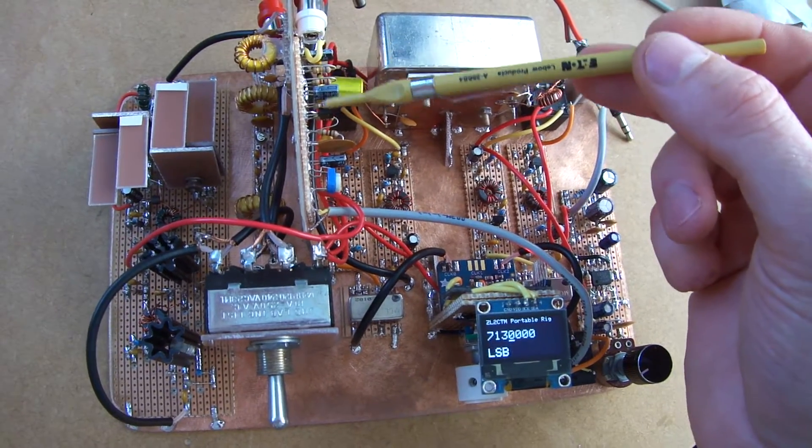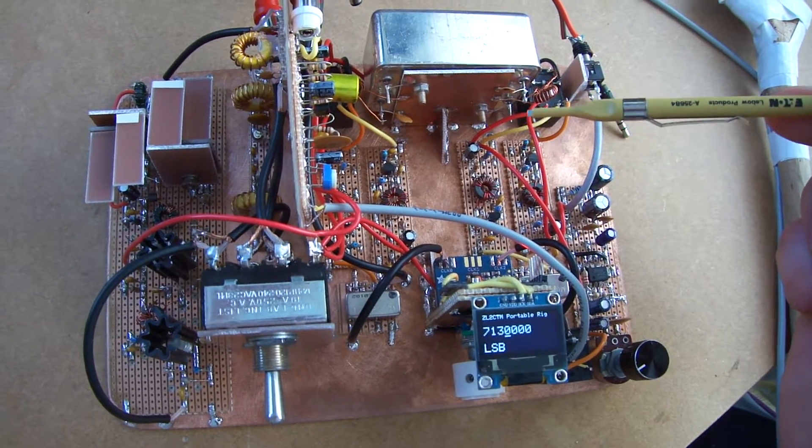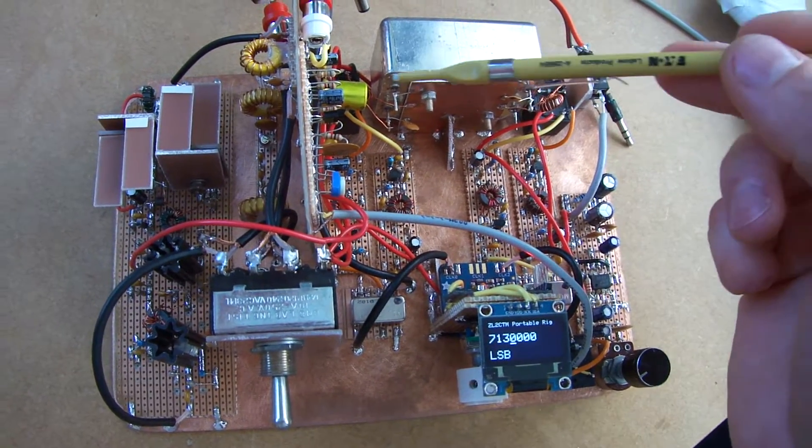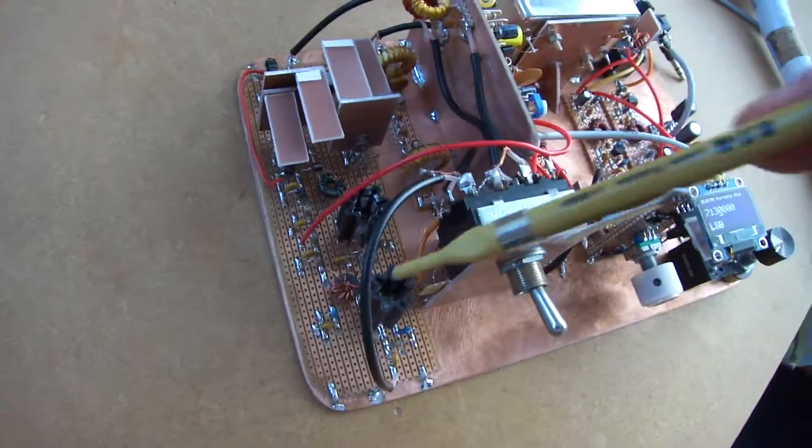Transmit audio, through the microphone amplifier, across, mixed up, back up through the IF chain, through the filter, back down, through the TR switch into a J-Bot.